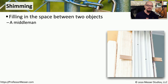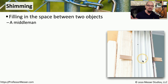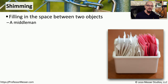A shim is something used to fill the gap between two different objects. If you're installing a door, you may use a piece of wood as a shim between the door jam and the wall. Or in a restaurant, if a table is uneven, you can use a sugar packet as a shim between the bottom of the table and the floor.